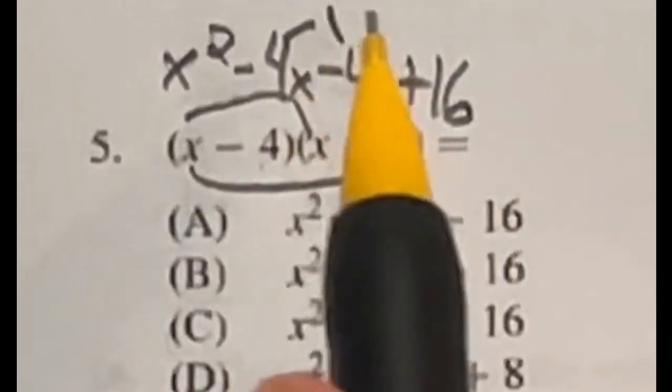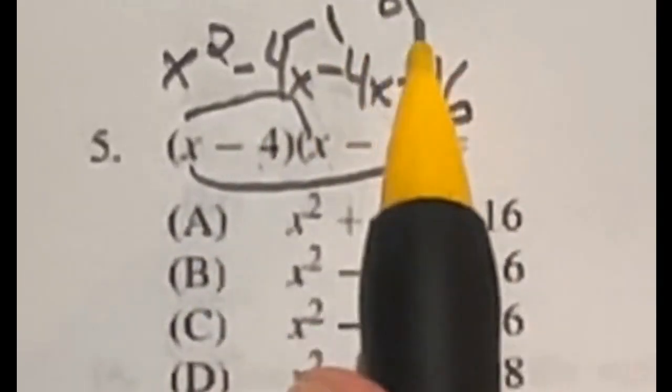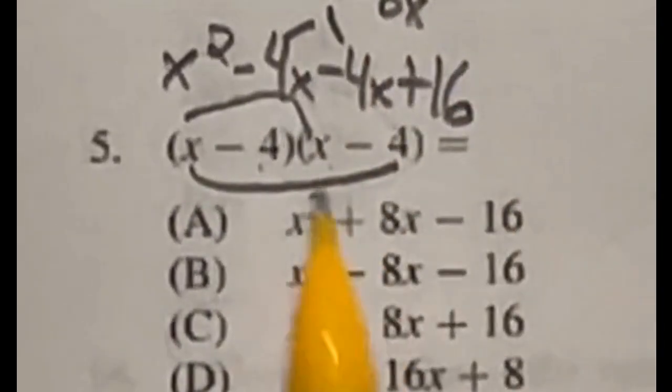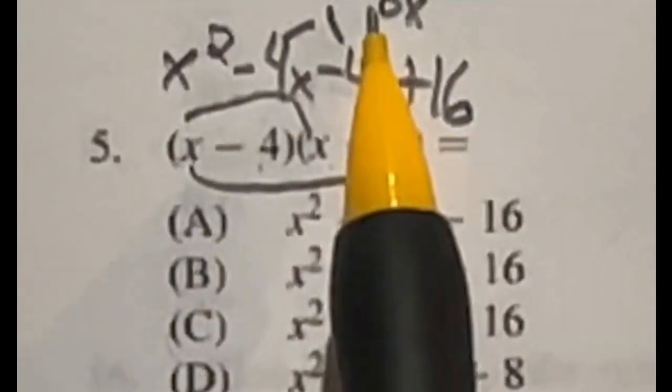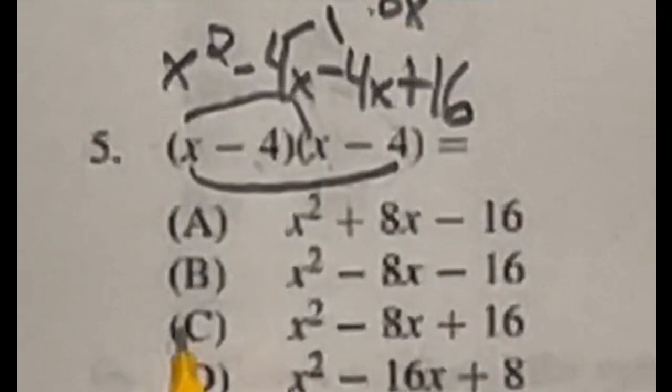Now, these two negative 4s will combine into a negative 8 when added together, negative 8X. So that means our final answer should be X squared minus 8X plus that 16, which is answer C.